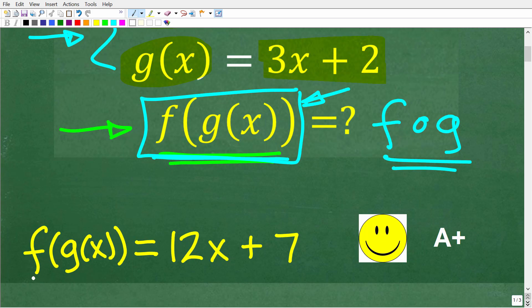The correct answer here is f(g(x)), this composite function, is equal to 12x plus 7.